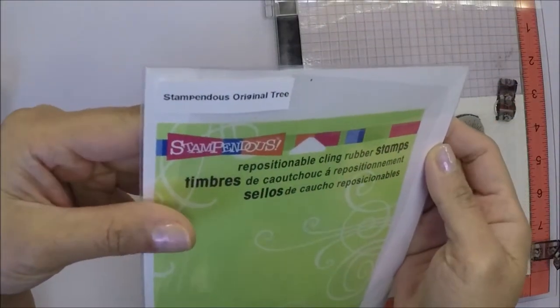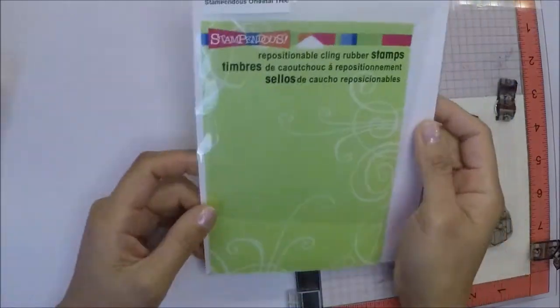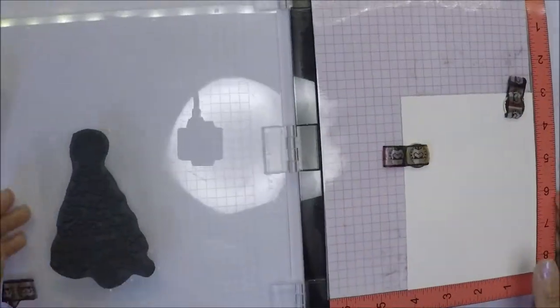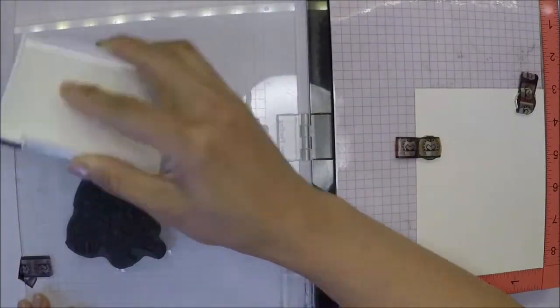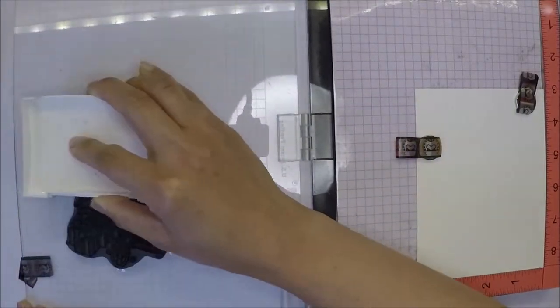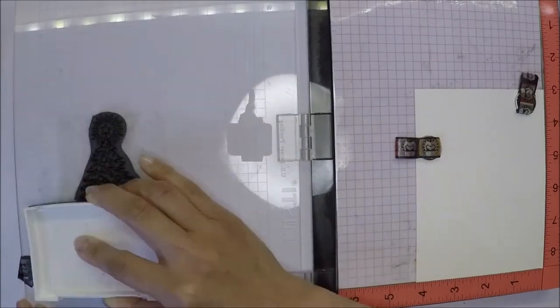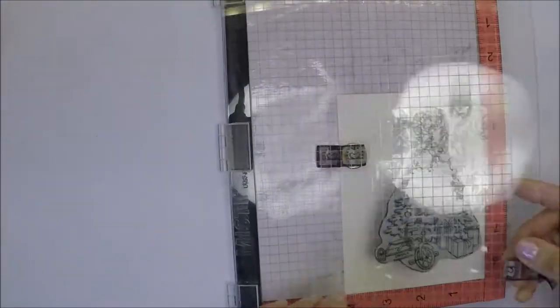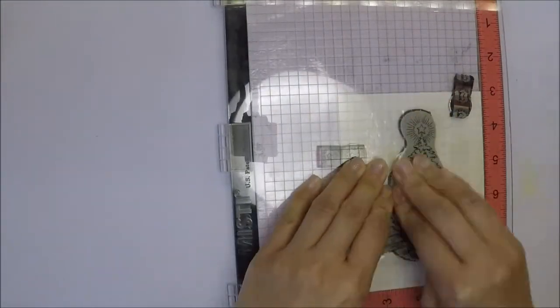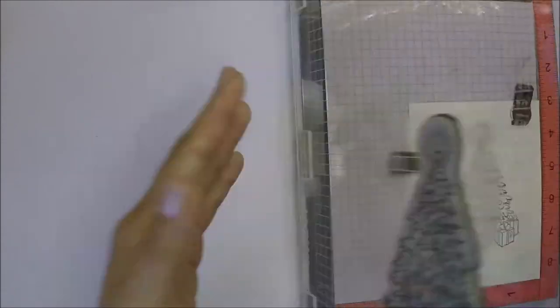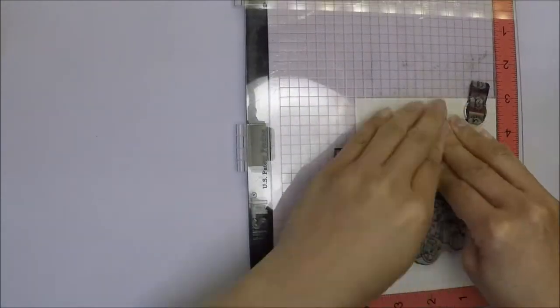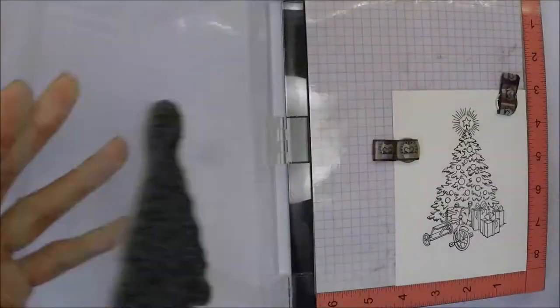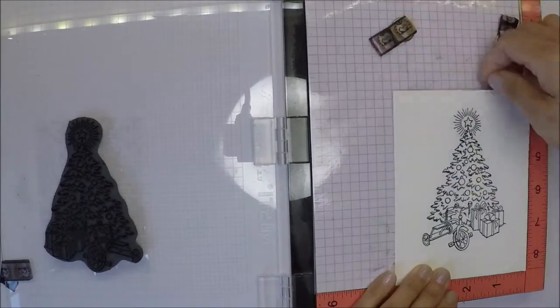The stamp set I used for today's card is Stampendous original Christmas tree cling stamp. I've had this stamp set for a few years now and I don't know if it's still available, but if I find it online I'll link it in my description box below. I'm using my MISTI so I can stamp my image a few times if I need to, and the ink I'm using is Versafine Onyx Black ink. This ink is good for watercolors.